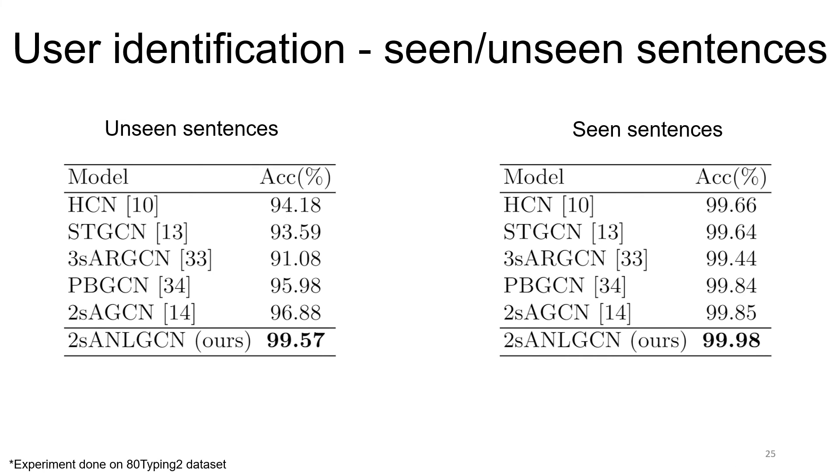We experimented with 80Typing10. On the left table, we present our result for classification on unseen sentences in an extreme case, where only one type of sentence is available for training.